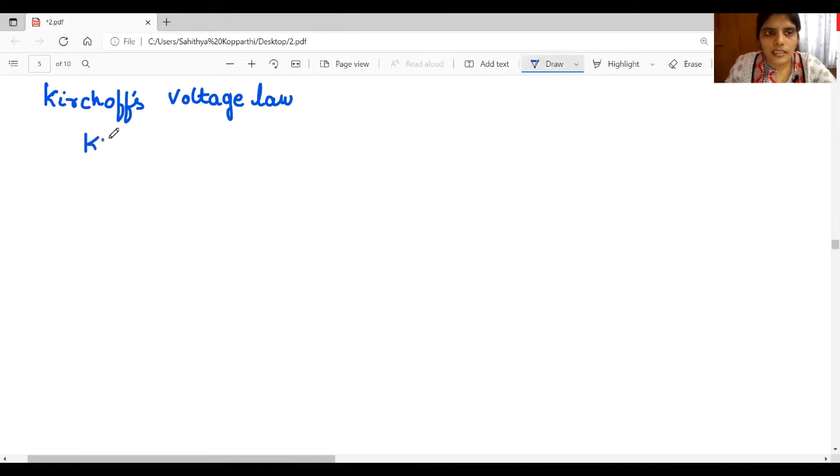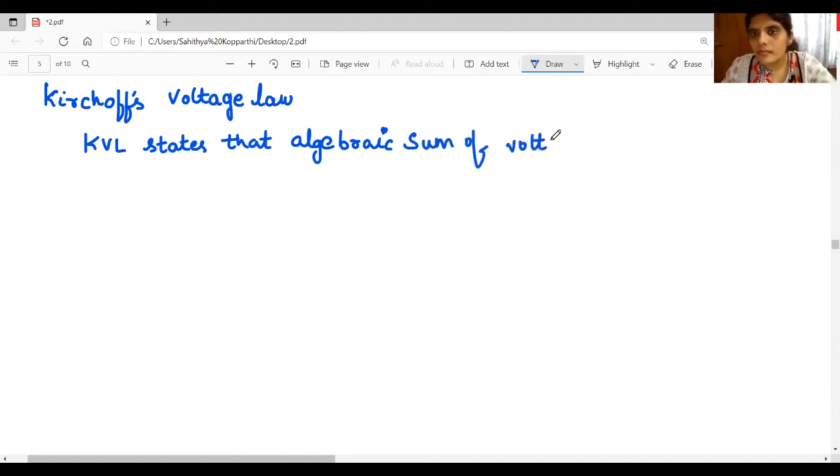KVL states that algebraic sum of voltages around any closed loop is equal to zero.